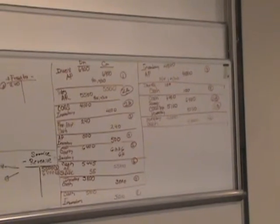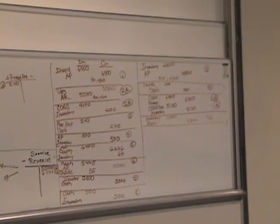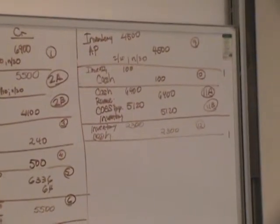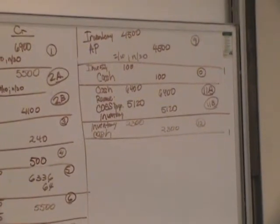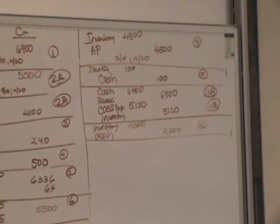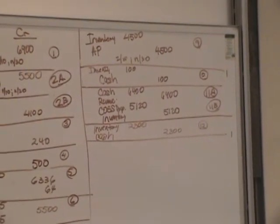One way to prove it: 4,500 times 0.98 equals 4,410. Okay, that's how much cash — $4,410. 2%. That's right.